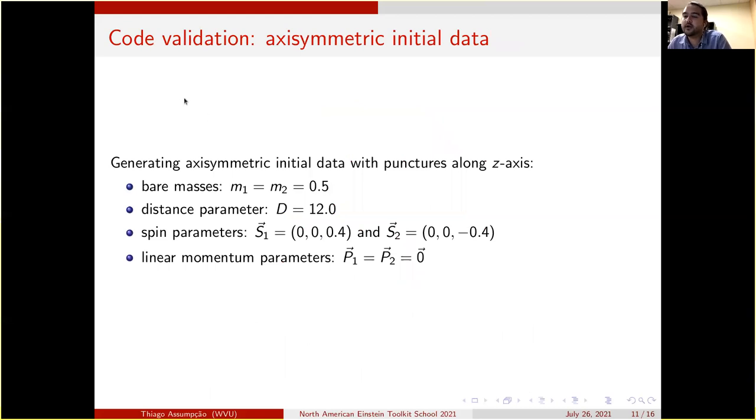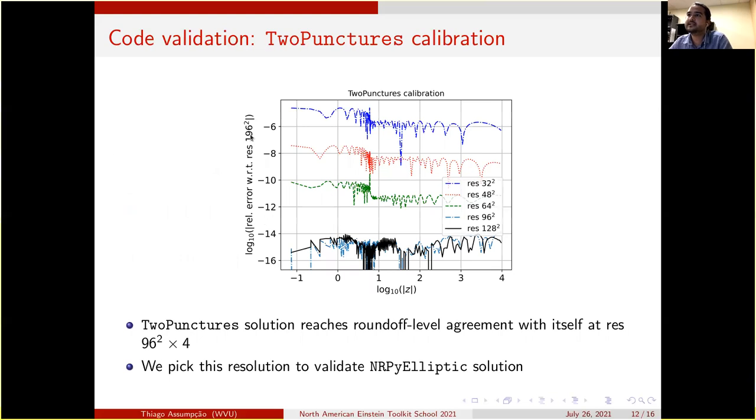So as a code validation, we are setting up axisymmetric initial data with two punctures along the z-axis with equal bare masses, distance parameter 12. We choose spin parameters in the z-direction as well and no linear momentum.